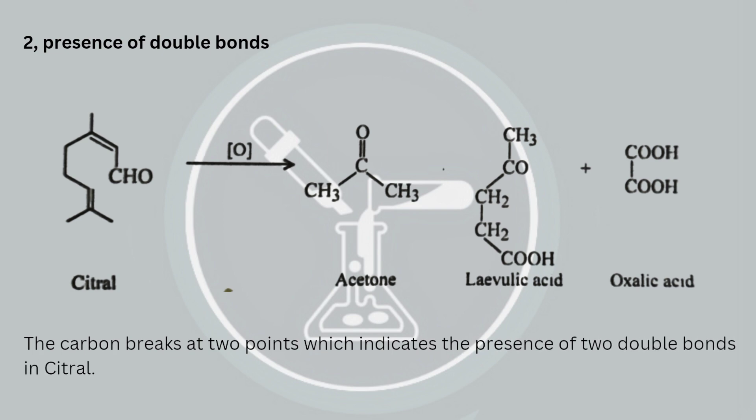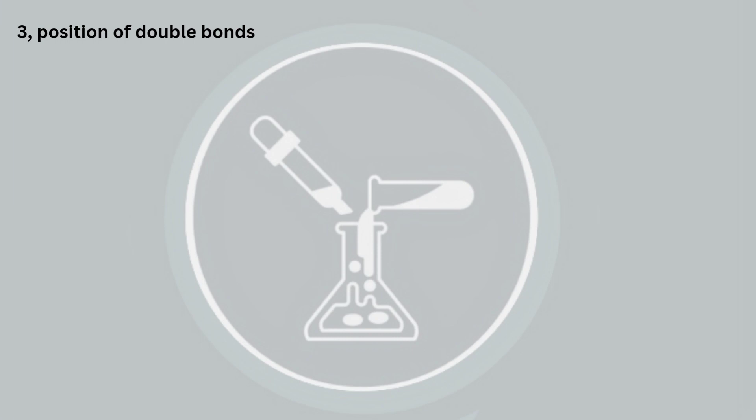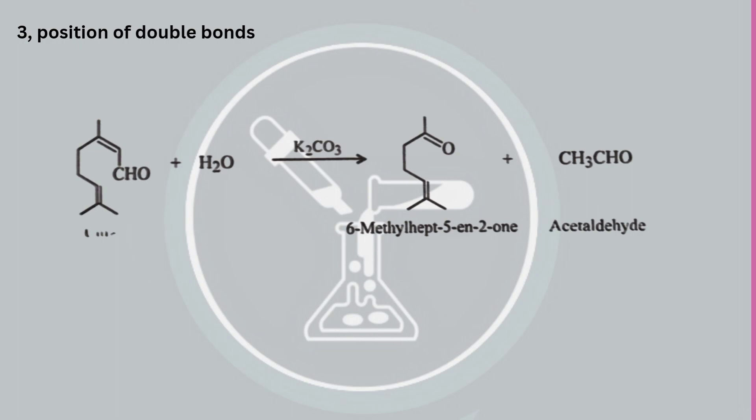So there is a presence of two double bonds in citral. We can confirm this structure by another reaction. When heated with potassium carbonate solution, citral undergoes hydrolysis to give methyl heptanone and acetaldehyde.